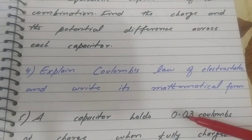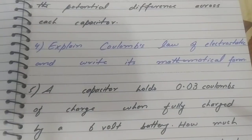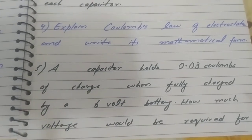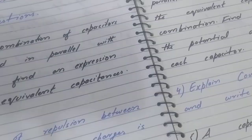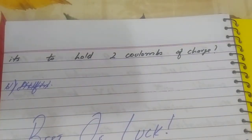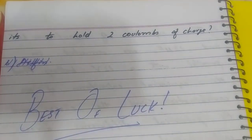Question number four is: explain Coulomb's law and write its mathematical form — this is both short and long. Question number five is: a capacitor holds 0.03 coulomb of charge when fully charged by a six volt battery. How much voltage will be required for it to hold two coulombs of charge? So those are the long questions. In the end, for the series combination, if another one comes, you can do it.